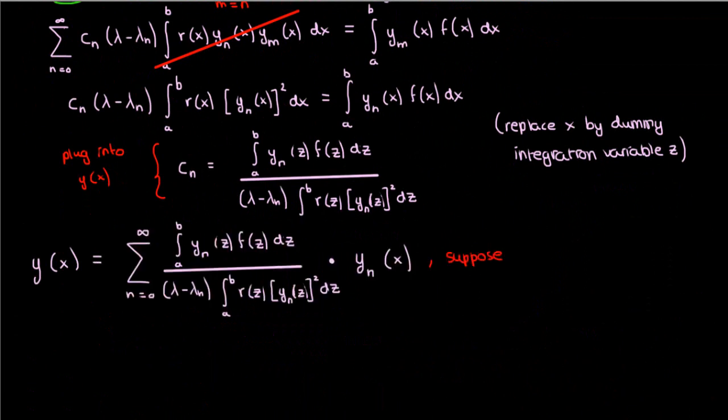Now, suppose that my eigenfunctions y sub n are all normalized, which means that the integral in the denominator is equal to 1.